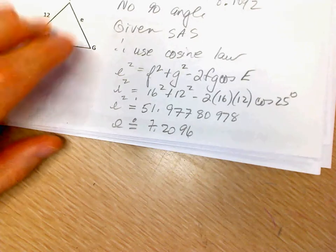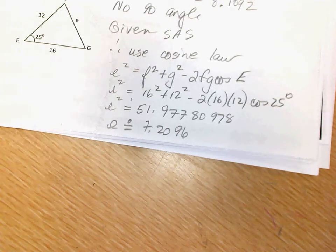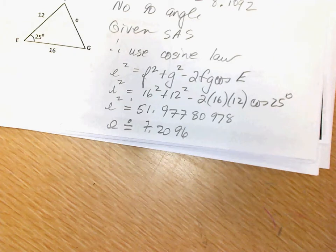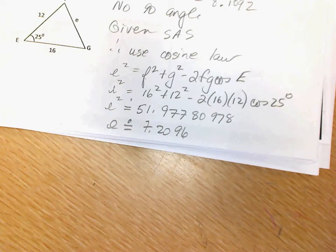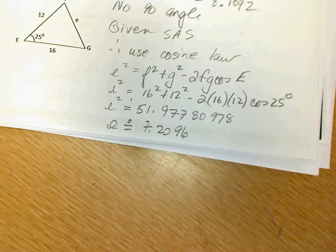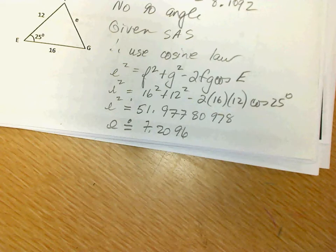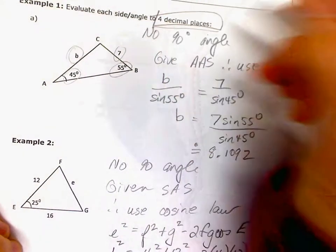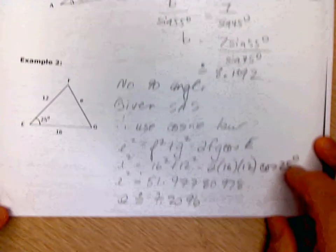Do we always go to 4 decimal places? Do whatever the test or question tells you to do. More often than not it's sides to one decimal place and angles to the nearest whole number, but just do what the question tells you. This question asks for 4 decimal places, so put your final answer to 4 decimal places.